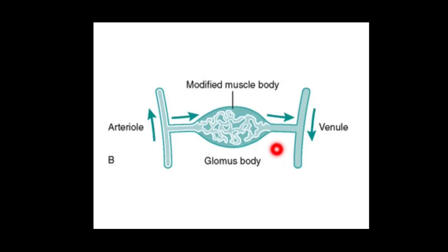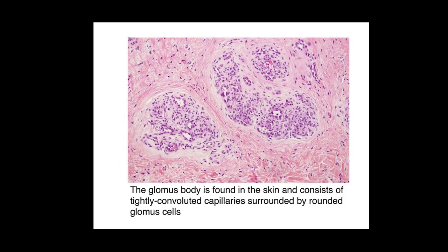This is how it looks like — an arteriole, a venule and the arteriovenous anastomosis containing the modified smooth muscle cells. This is the histology which shows it. You can see the glomus cells, the capillary space, and these are the smooth muscle or modified smooth muscle cells.